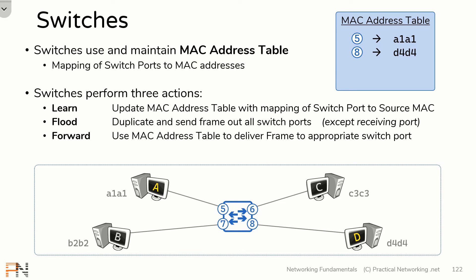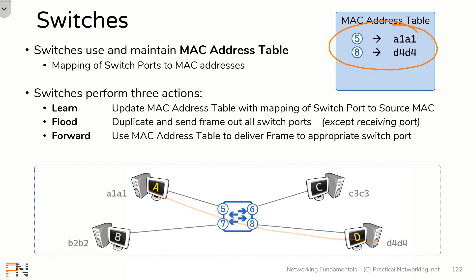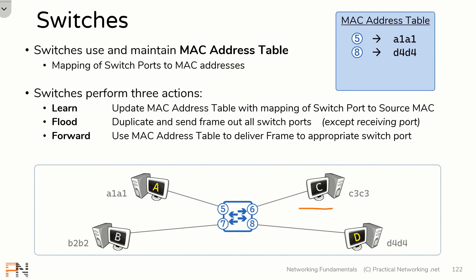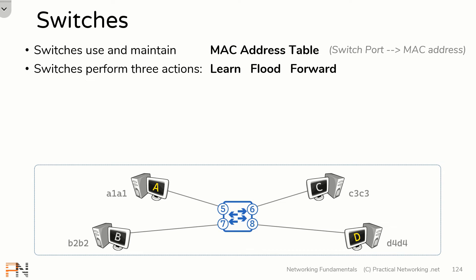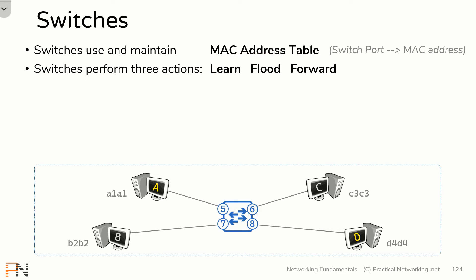At this point, anything else that A and D need to send to each other will go directly to each other. Now that the MAC address table is populated with both hosts' MAC addresses, anything A and D send will go directly without flooding, which means host C and host B will not get a copy of any of that data. That wraps up our discussion of how switches work. Switches use and maintain a MAC address table — a mapping of switch port to MAC address — and switches perform only these three actions: learning, flooding, and forwarding. If you understand these three actions, you understand how any switch for any vendor on any platform facilitates communication within a network.